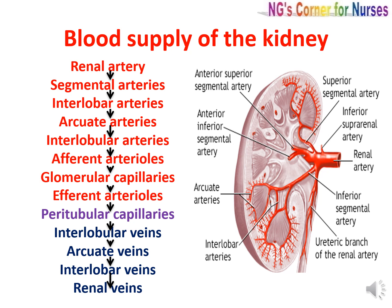Coming to the blood supply of the kidney — in this picture we can see the arrangement of arteries. Blood from the abdominal aorta at L2 level goes to the renal artery, then to five segmental arteries, then each segmental artery leads to the lobar artery, interlobar artery, arcuate artery, interlobular artery, afferent arteriole, and glomerulus. From the glomerulus, blood goes into the efferent arteriole, then the peritubular plexus, interlobular vein, arcuate vein, interlobar vein, lobar vein, segmental vein, then five segmental veins drain into the renal vein, and from there into the inferior vena cava.